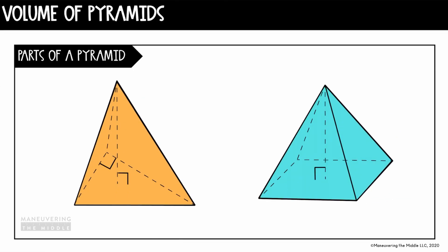A pyramid is named by the shape of the base. Looking at the left, this orange pyramid has a triangle-shaped base, so we would call that a triangular pyramid. And on the right, this base is in the shape of a rectangle, so that would be a rectangular pyramid.